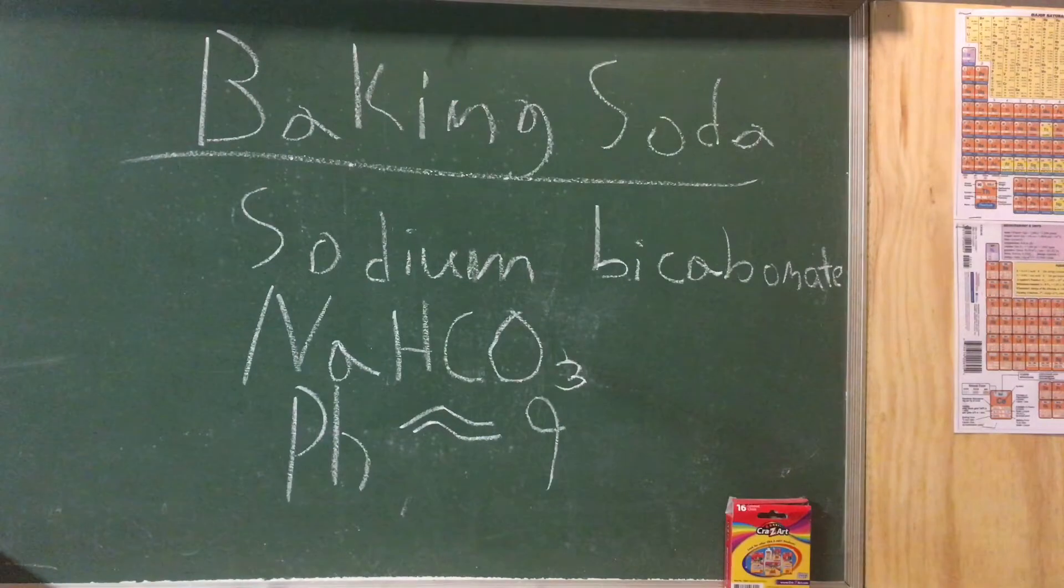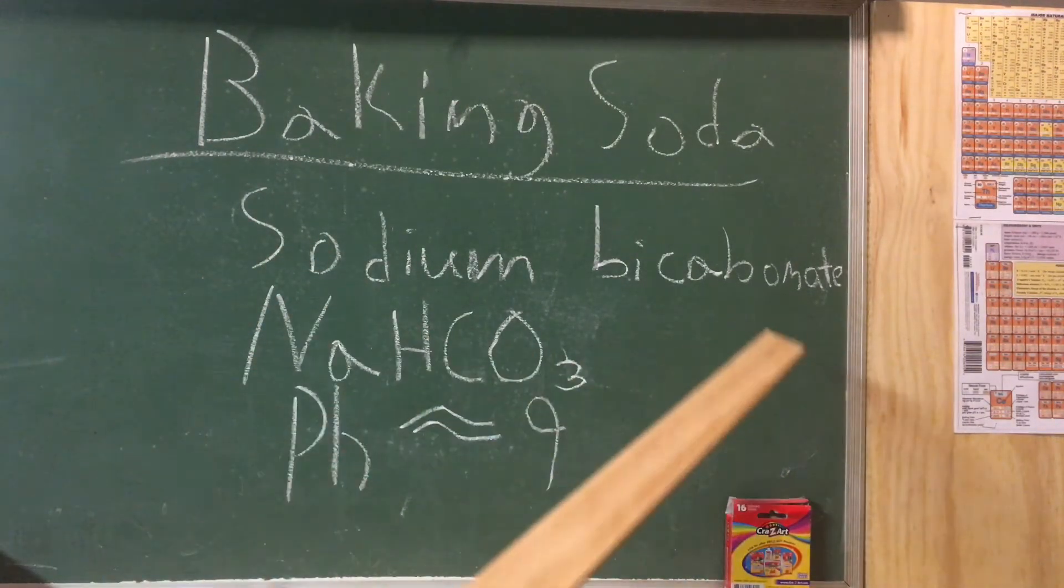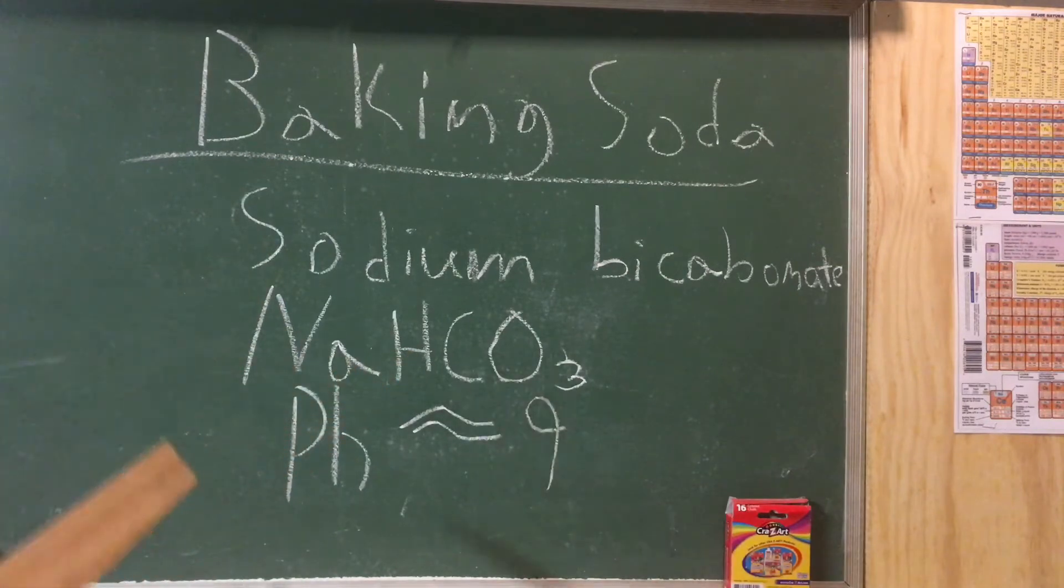An example of something that is basic is baking soda. Its technical term and actual name that people should use is sodium bicarbonate. It has a formula of NaHCO3 and its pH is about 9.